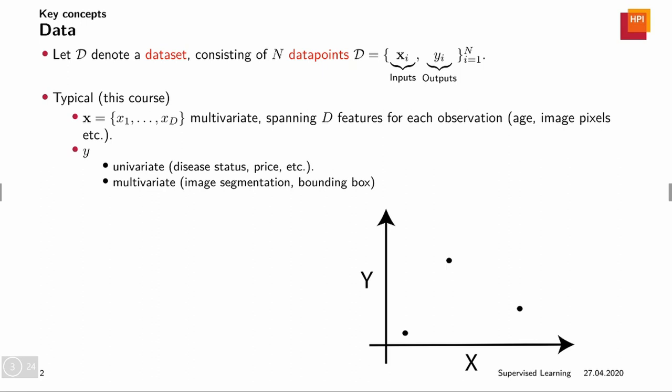Typically, x is a vector, so it's multivariate in the sense that it consists of number d of features for each data point, for each observation. Features could really be anything - it could be the age of a person, the sex of this person if an observation is a person obviously, or if the observation is an image it could be the image pixel values. So three values RGB for each pixel.